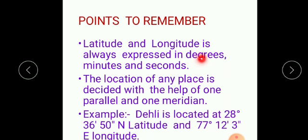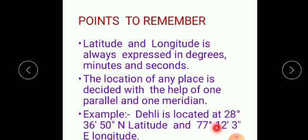The location of any place is always decided with the help of one parallel and one meridian — that means one latitude and one longitude. For example, Delhi is located at 28° 36' 50" North latitude and 77° 12' 3" East longitude.